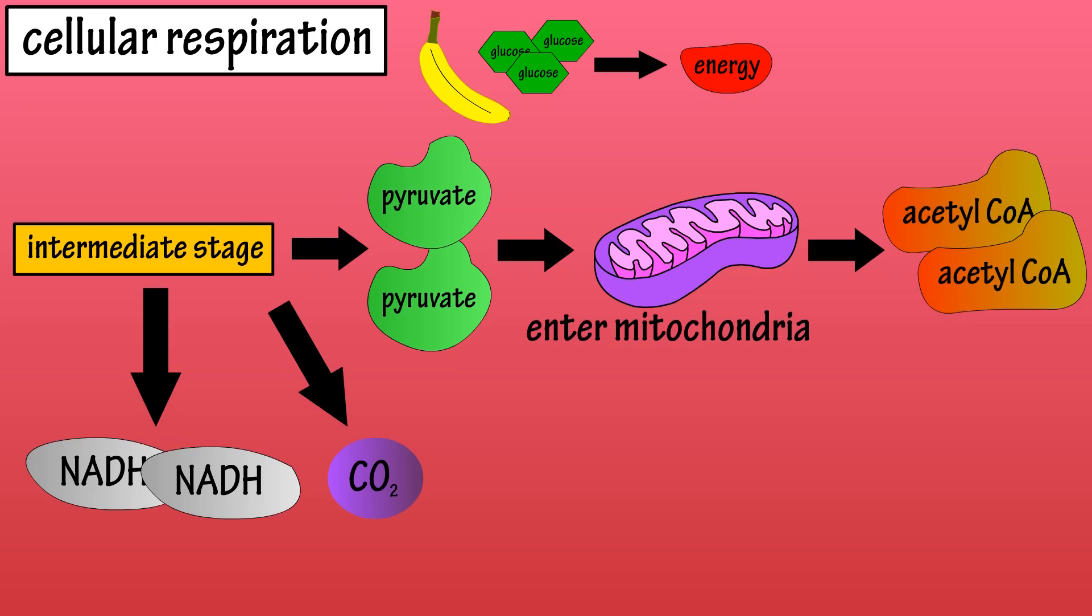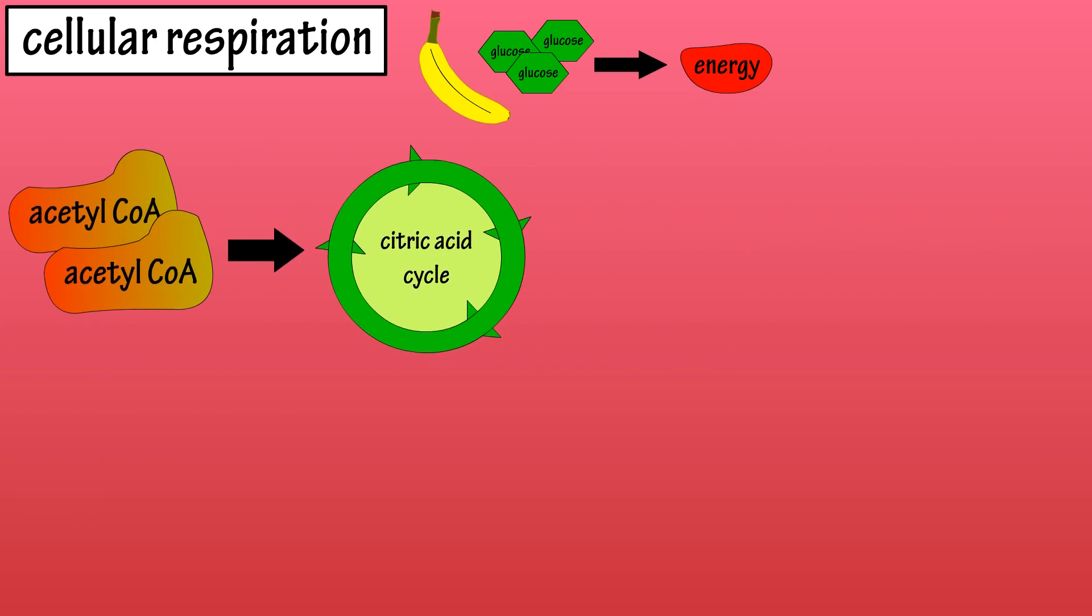Next is the third stage, the citric acid cycle. In the citric acid cycle, acetyl-CoA goes through several steps leading to the production of one ATP molecule, three NADH molecules, and one FADH2 molecule, as well as the release of two more carbon dioxide molecules.